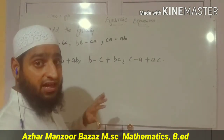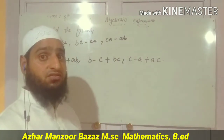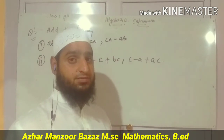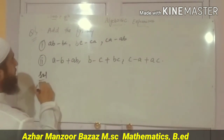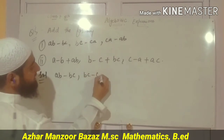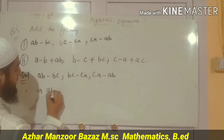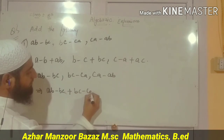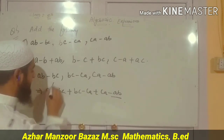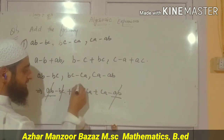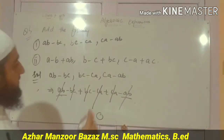In the second half of this exercise we have to add the following. Remember, only like terms are added — unlike terms are not added. For the first part: ab minus bc, bc minus ca, ca minus ab. We add them together: ab minus ab cancels out, minus bc plus bc cancels out, ca minus ca cancels out — the answer comes out as zero.